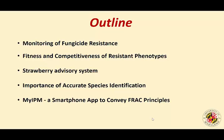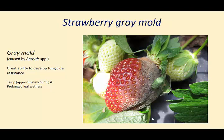I will use strawberry gray mold and anthracnose as examples throughout my presentation. Gray mold is caused by Botrytis species. There are two Botrytis species affecting strawberries: Botrytis cinerea and Botrytis fragariae. Both species have a great ability to develop fungicide resistance. Optimal temperature is around 68°F with prolonged leaf wetness as favorable conditions.